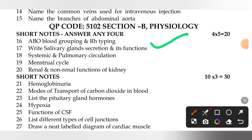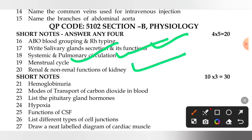The next question is to write about the salivary gland's secretion and its functions. The third question is to explain the systemic and pulmonary circulation. Next is to explain the menstrual cycle. The option is to explain the renal and non-renal functions of the kidney.